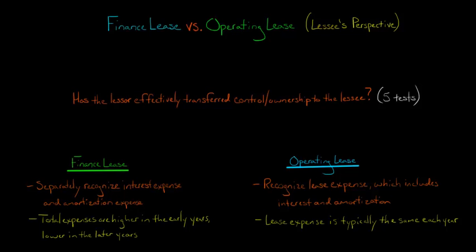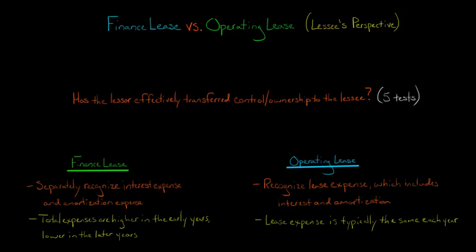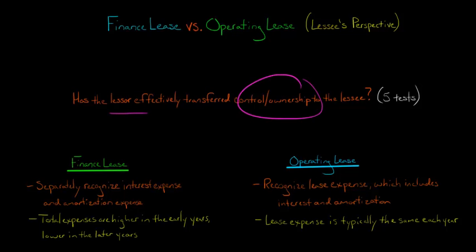In this video, we're going to discuss the difference between a finance lease and an operating lease from the perspective of the lessee. The main theoretical difference is that with a finance lease, the lessor has effectively transferred control or ownership of the property to the lessee. There are five tests used to determine whether it should be a finance lease or an operating lease, covered in a separate video. Here, we focus on the accounting differences.